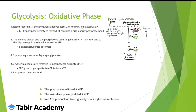In the oxidative phase, it's obvious from the name that there will be oxidation of glyceraldehyde 3-phosphate. Two electrons are transferred, and then an inorganic phosphate is linked to the molecule, forming a high-energy phosphate bond. This produces 1,3-bisphosphoglycerate.